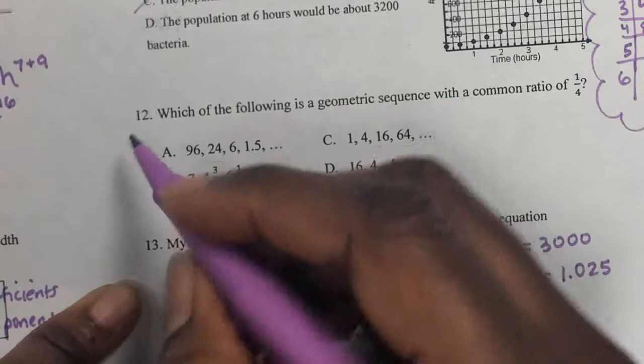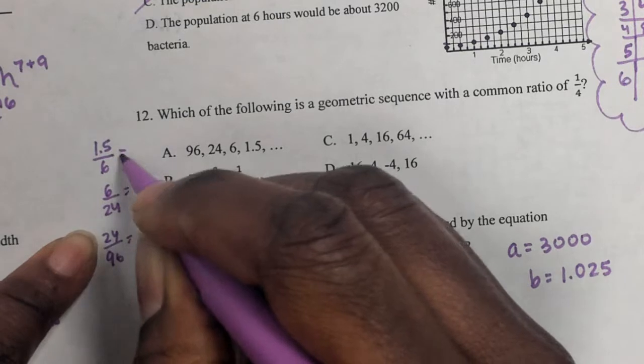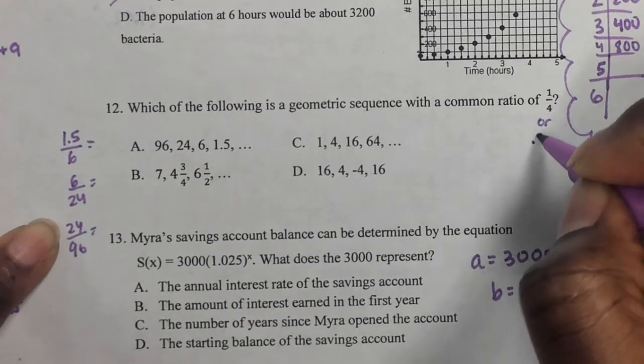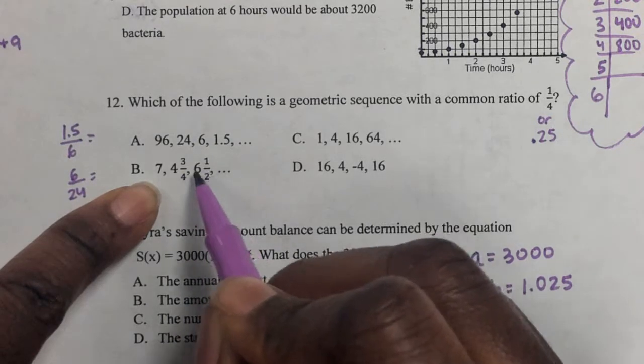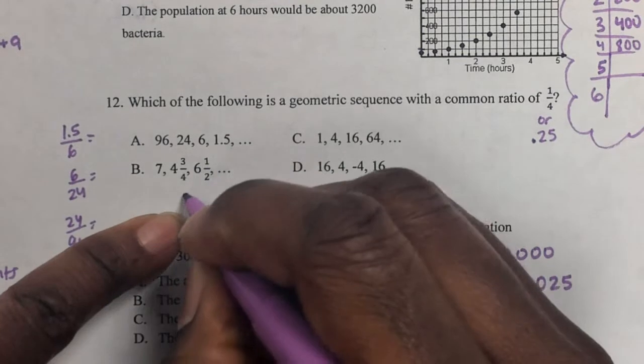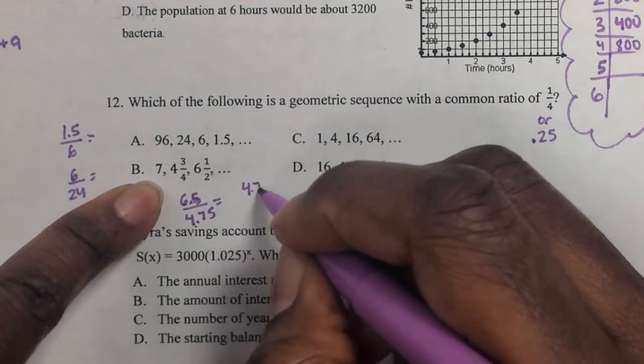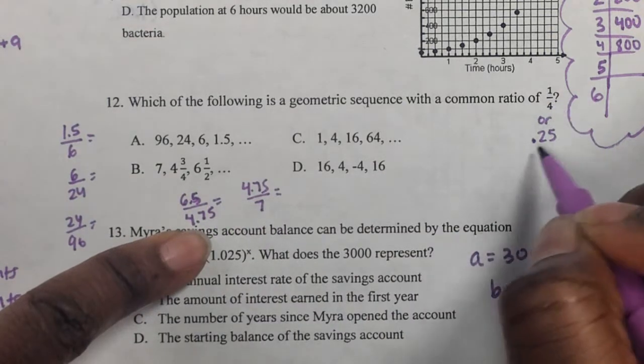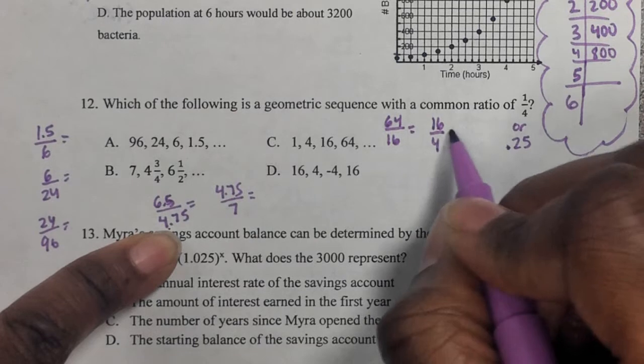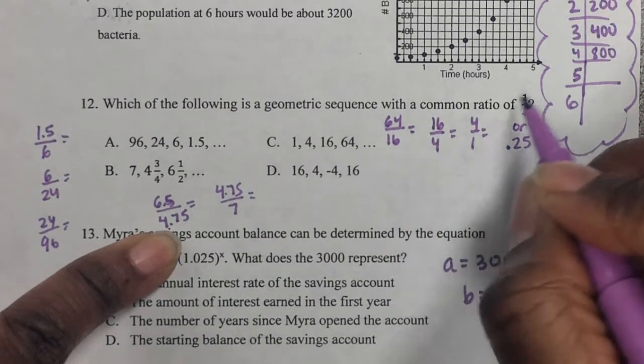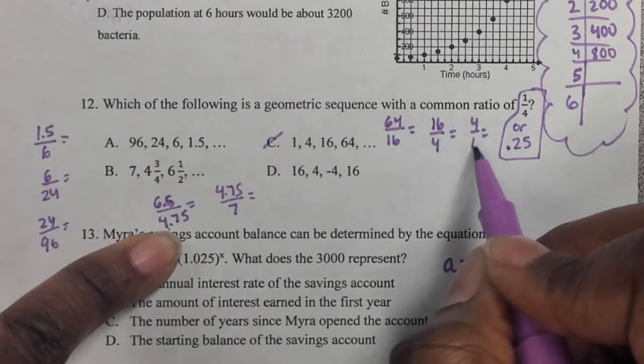All right. So for A, 1.5 divided by 6, 6 divided by 24, 24 divided by 96. See if all of those equal, I'm sorry, 1 over 4, which is also 0.25, that's your answer. If not, then you need to go to B. And be careful with this in your calculator, because this is 6 and a half, which we don't really use mixed numbers. So that's like 6.5 divided by 4.75. We want to make sure that would be 1 over 4. Or is it 4.75 divided by 7? Check both of those to see if it equals 1 over 4 or 0.25. If it's not, same little backwards division here. 64 divided by 16. What does that equal? 16 divided by 4. What does that equal? 4 divided by 1. What does that equal? Does it equal this or this? I can see it's not C. That's the easiest one for me, because 16 divided by 4 is 4. 4 divided by 1 is 4, so it can't be C.